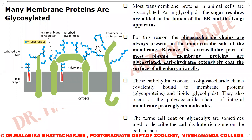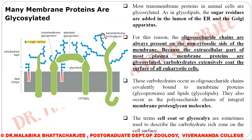Certain polysaccharide chains are also attached to an integral membrane protein — this is a proteoglycan molecule. Since carbohydrates are restricted to the outer leaflet of the plasma membrane, the term cell coat or glycocalyx is used to describe this carbohydrate-rich zone on the cell surface. Glycocalyx means nothing but the carbohydrate-rich zone present on the outer surface of the plasma membrane. Carbohydrates are always restricted to the outer leaflet of the lipid bilayer.